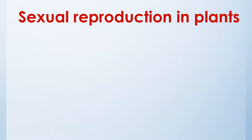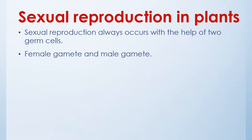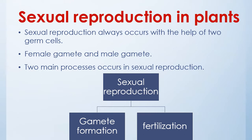Sexual reproduction in plants — let's start. Sexual reproduction always occurs with the help of two germ cells. The two germ cells involved are female gametes and male gametes. Two main processes occur in sexual reproduction: gamete formation and fertilization.